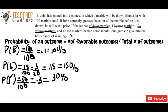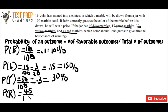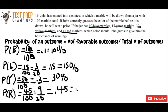The last calculation is the probability of drawing a red marble — P(R). There are 45 red marbles, so it's 45 over 100. To express this as a fraction, divide both the top and bottom by 5: 45 divided by 5 is 9, and 100 divided by 5 is 20, giving 9 over 20. As a decimal, 9 divided by 20 equals 0.45, and as a percent, that's 45%.